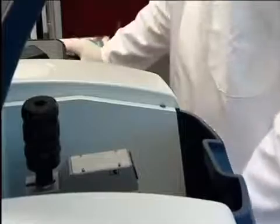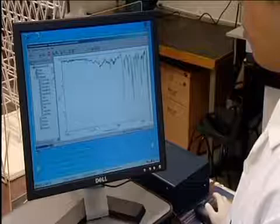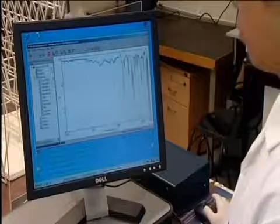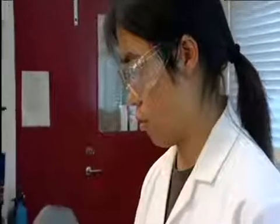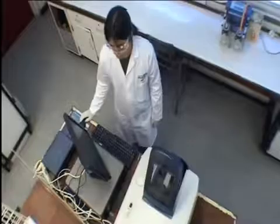The interferogram that arrives at the detector can be decoded by a mathematical technique called a Fourier transformation. This gives the intensity of the infrared radiation at each frequency separately. The transformation is handled by the computer and produces a graph of percentage transmission against wave number. This is what the chemist interprets.